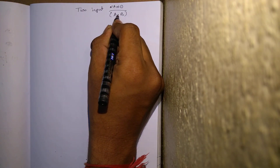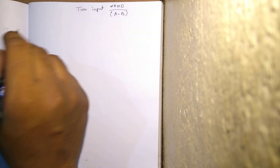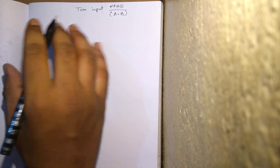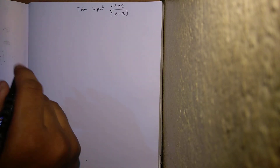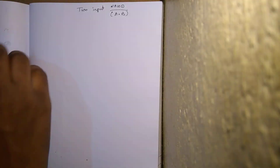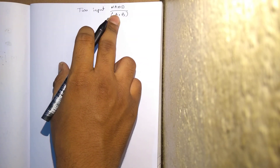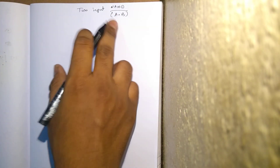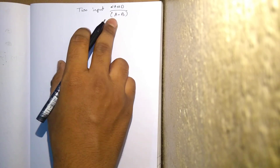In the pull-up network we have PMOS transistors. For PMOS, dot — which means AND — indicates parallel. So both A and B will be in parallel in the pull-up network.